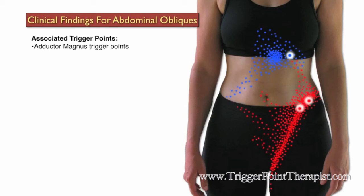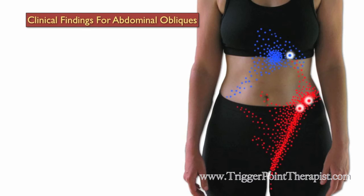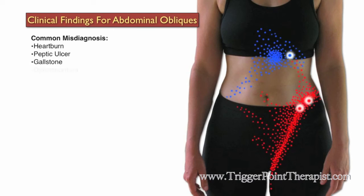Some associated trigger points for the abdominal obliques include the adductor magnus and the quadratus lumborum, because of similar function and referral patterns. Clients with abdominal oblique trigger points are very commonly misdiagnosed with heartburn, peptic ulcer, gallstones, dysmenorrhea or painful menstrual cramping, rib subluxation, and bowel disease.